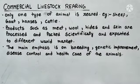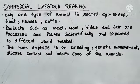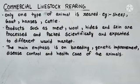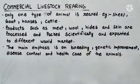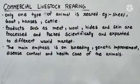Ab jo log inhe ranches pe palte hain, wo inki breeding karwaate hain taaki offspring de sakein. Ranches pe inke owners genetic improvement bhi karwaate hain — matlab bilkul pure species ke offspring, jise bahut se log nasal sudhaar bhi kehte hain. Ranches ke upar animals ki bahut zyada dekhbhal ki jaati hai — time to time doctors ko bulaaya jaata hai, animals ko vaccinate karwaaya jaata hai taaki unhe koi disease na lag jaaye.